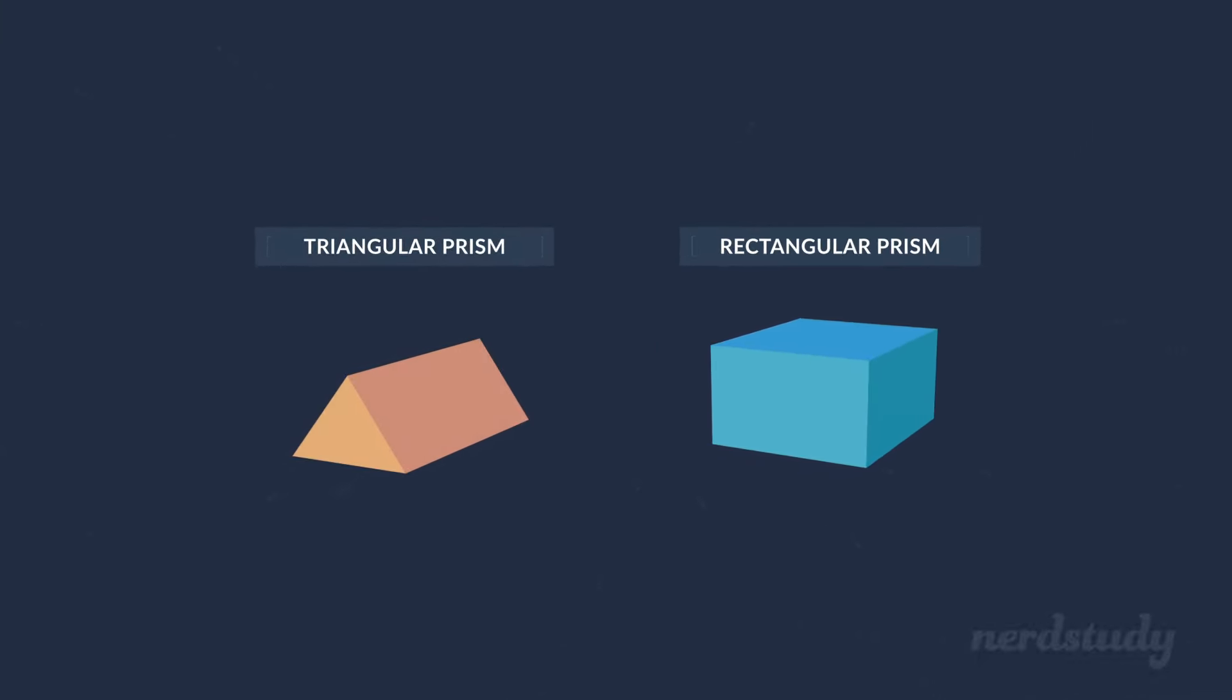Notice how the prism starts with a shape and ends with the same shape. Also, notice how if you made a cut at any point of the prism, the inside shape here would be the same as the shape on either ends of the prism. This is one of the key characteristics of a prism.